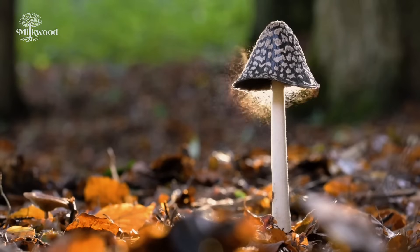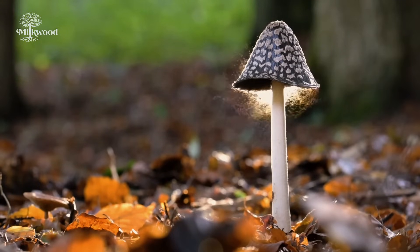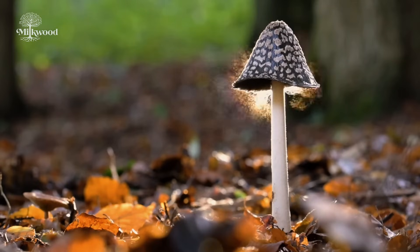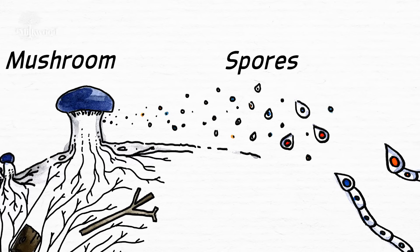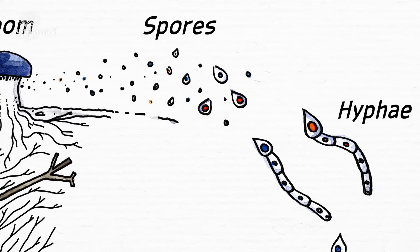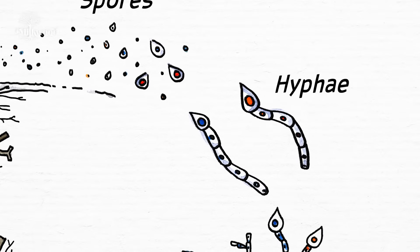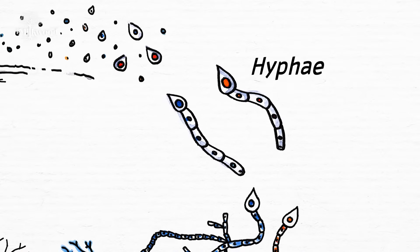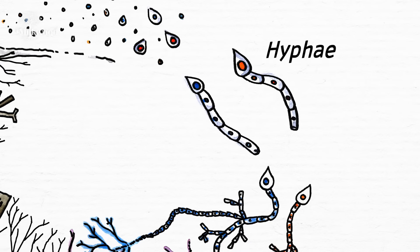In some ways, spores are a little like microscopic seeds. They provide a method for fungi to spread their genes and to reproduce sexually. They're so small they can be spread by really subtle air currents, and they are so tough they can lie dormant for many years. If a spore lands on a suitable material or substrate and all the conditions are right, they'll germinate and start to grow microscopic filament-like threads. Each thread is called a hypha, and a number of them are called hyphae.